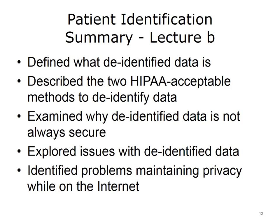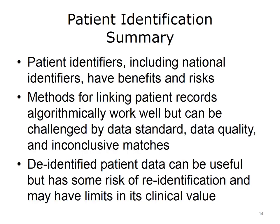This concludes Lecture B of Patient Identification. In this lecture, we defined what de-identified data is, described the two methods under HIPAA for de-identifying data, examined why de-identified data isn't necessarily secure data, explored some of the issues with de-identified data, and identified problems maintaining privacy while on the Internet. This also concludes our unit on Patient Identification. In this unit, we saw that patient identifiers, including national identifiers, have benefits and risks. Methods for linking patient records algorithmically work well, but can be challenged by data standards, data quality, and inconclusive matches. De-identified patient data can be useful, but has some risk of re-identification and may have limits in its clinical value.